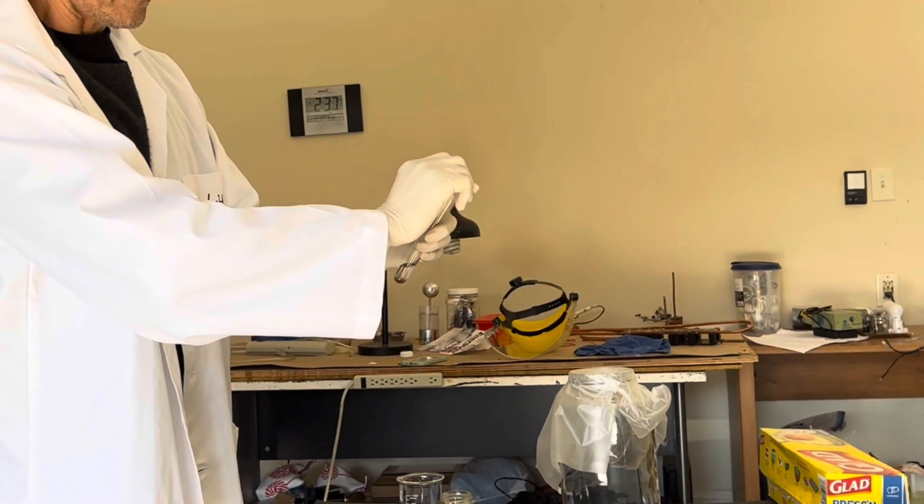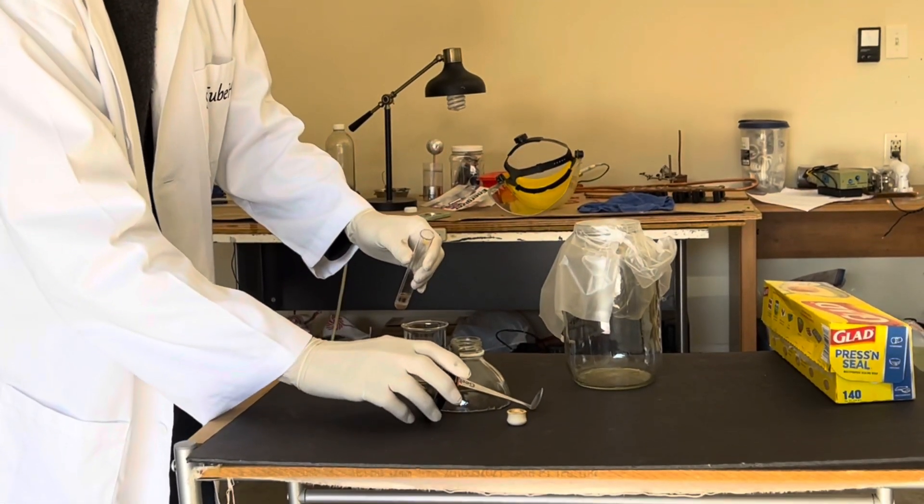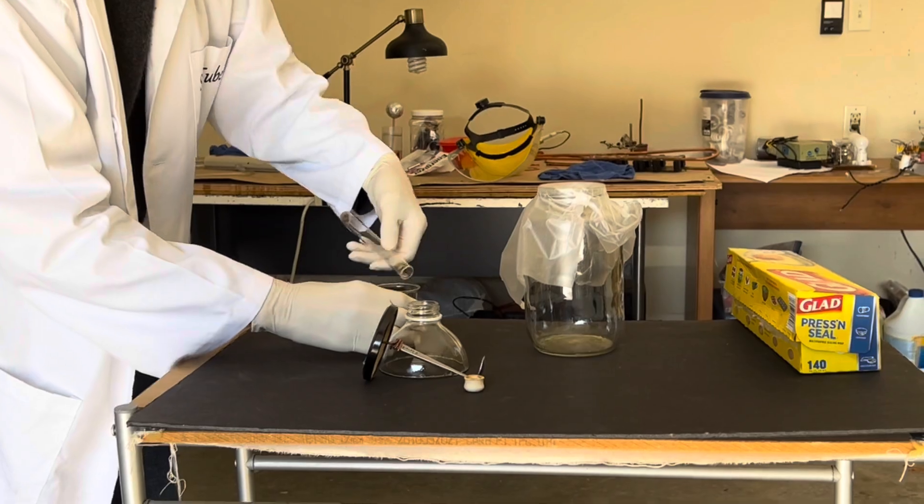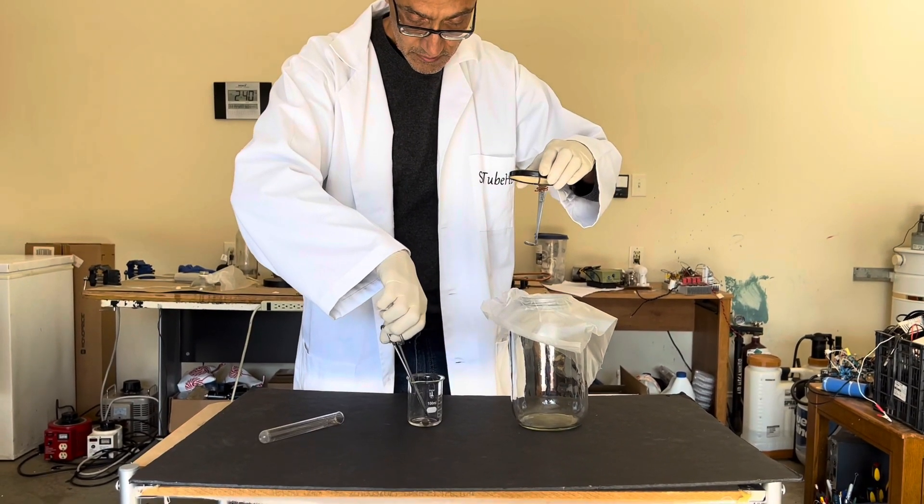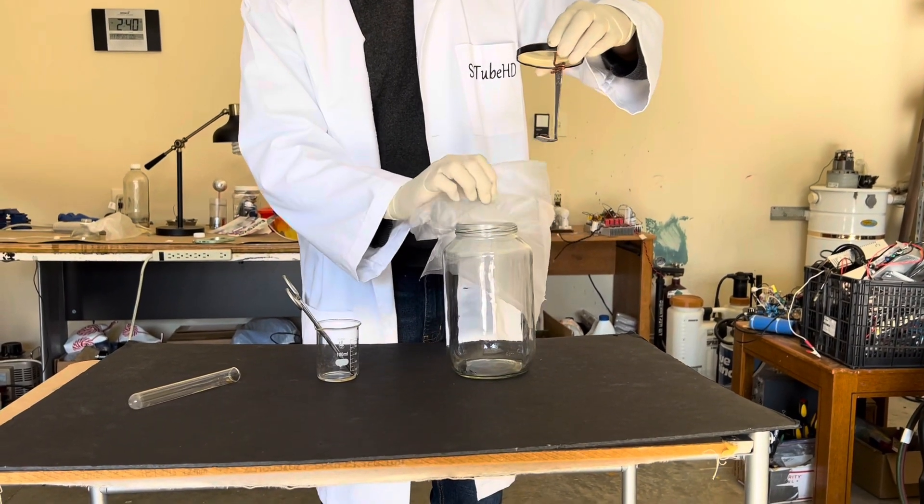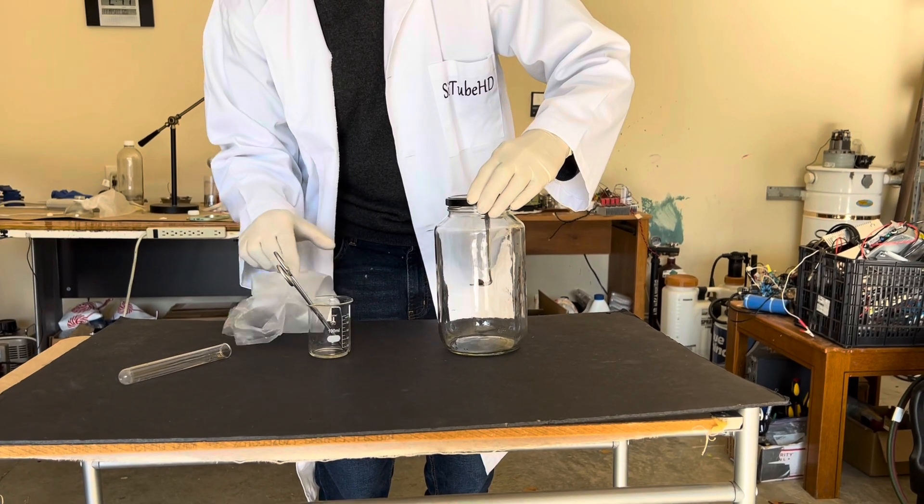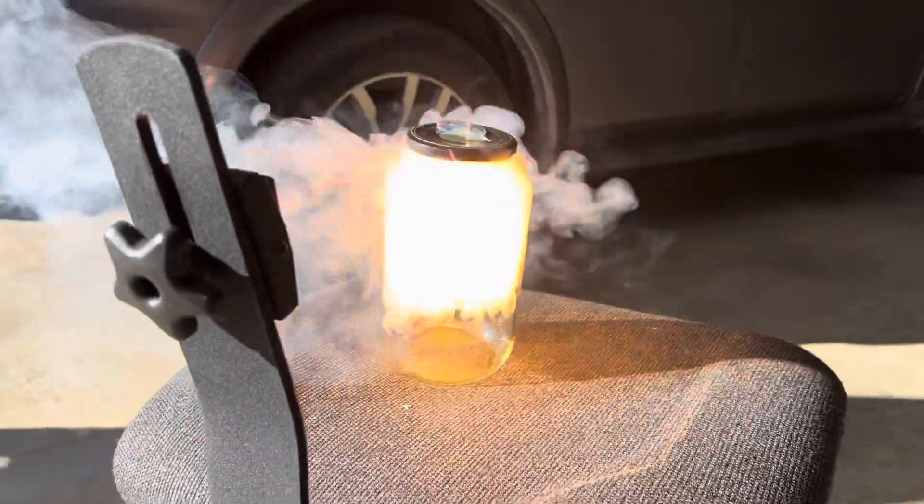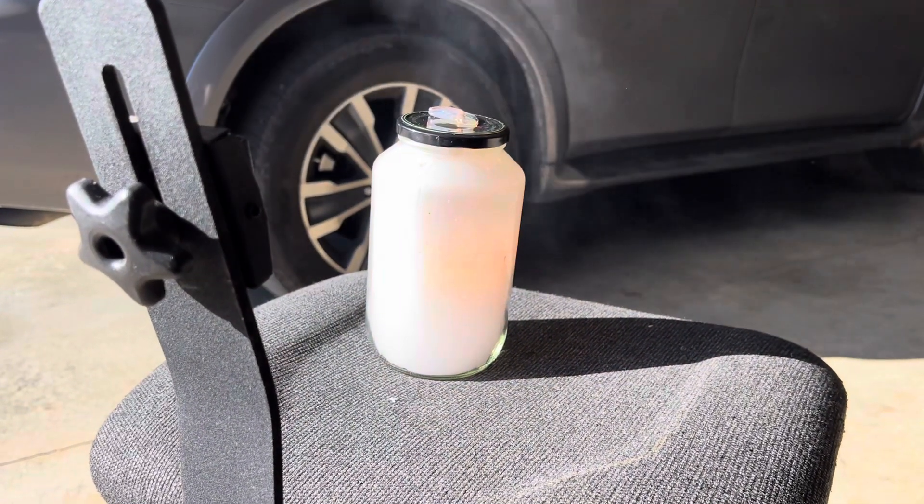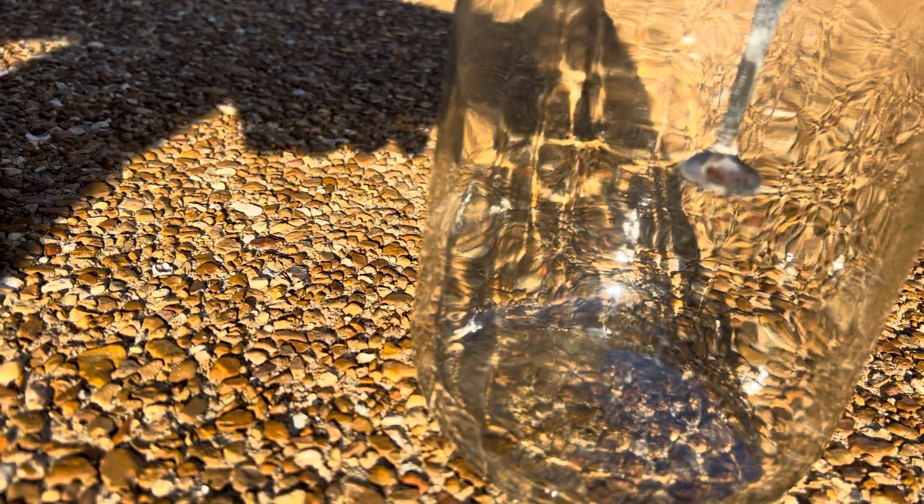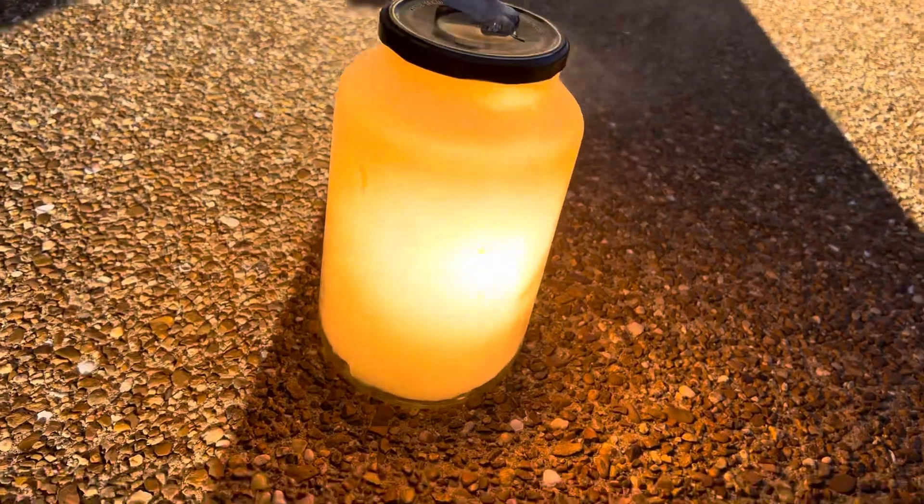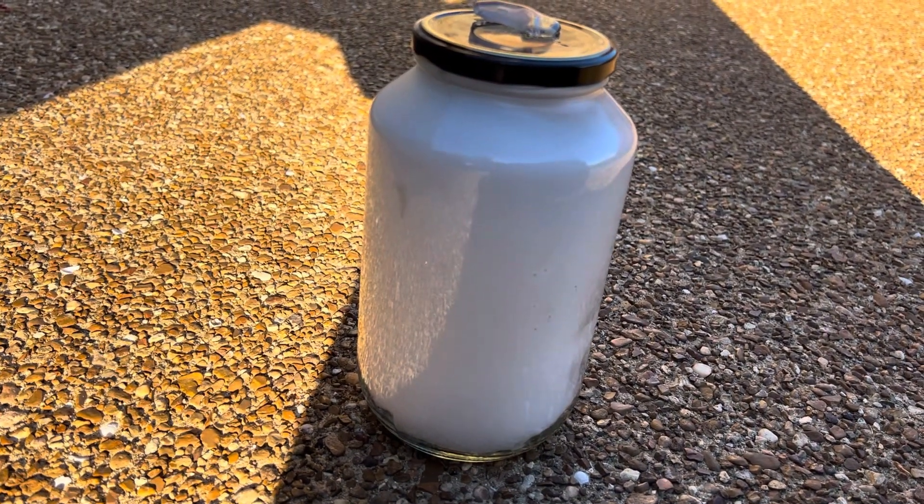What we're going to do now is pour off the water from this phosphorus into this beaker, and place a piece of phosphorus on that spoon. I need to take this outside quickly as it's going to ignite spontaneously.